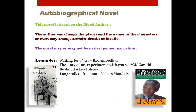An autobiographical novel is based on the life of the author — the author writes his own life story but can change the place, names of characters, or certain details. The novel may or may not be written in the first person. Examples include Waiting for Visa by B.R. Ambedkar, The Story of My Experiments with Truth by M.K. Gandhi, Boyhood by Leo Tolstoy, and Long Walk to Freedom by Nelson Mandela.